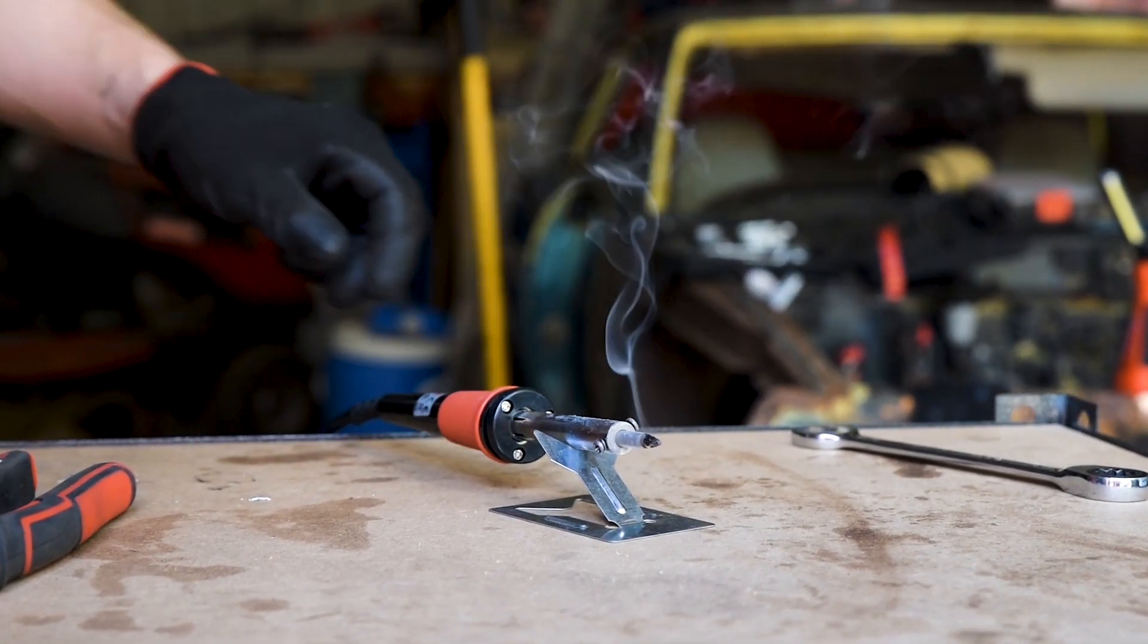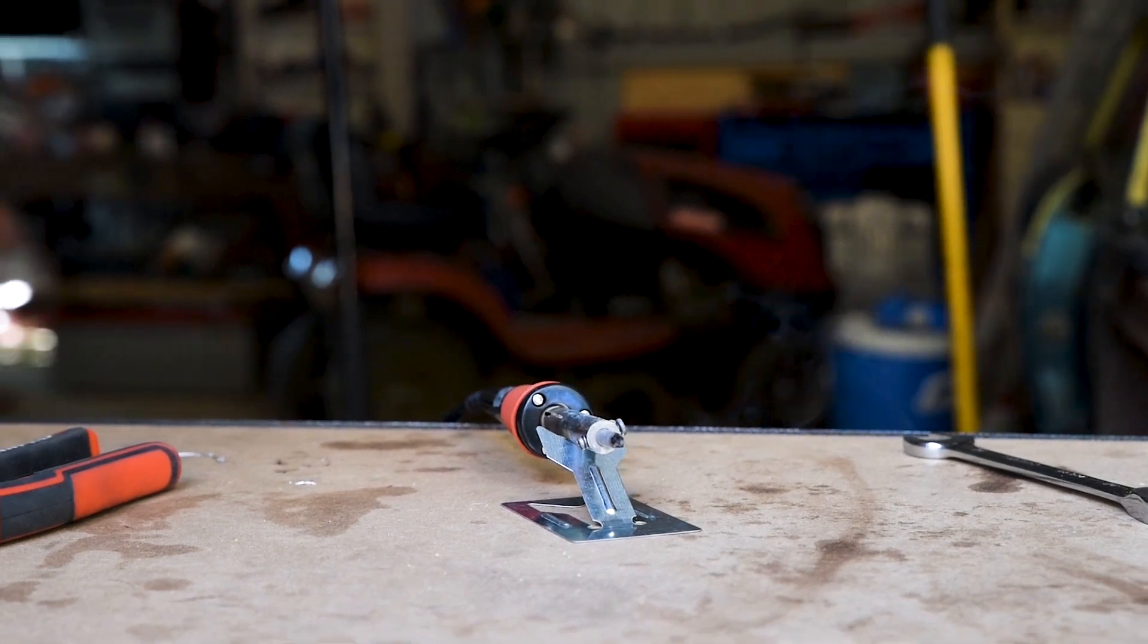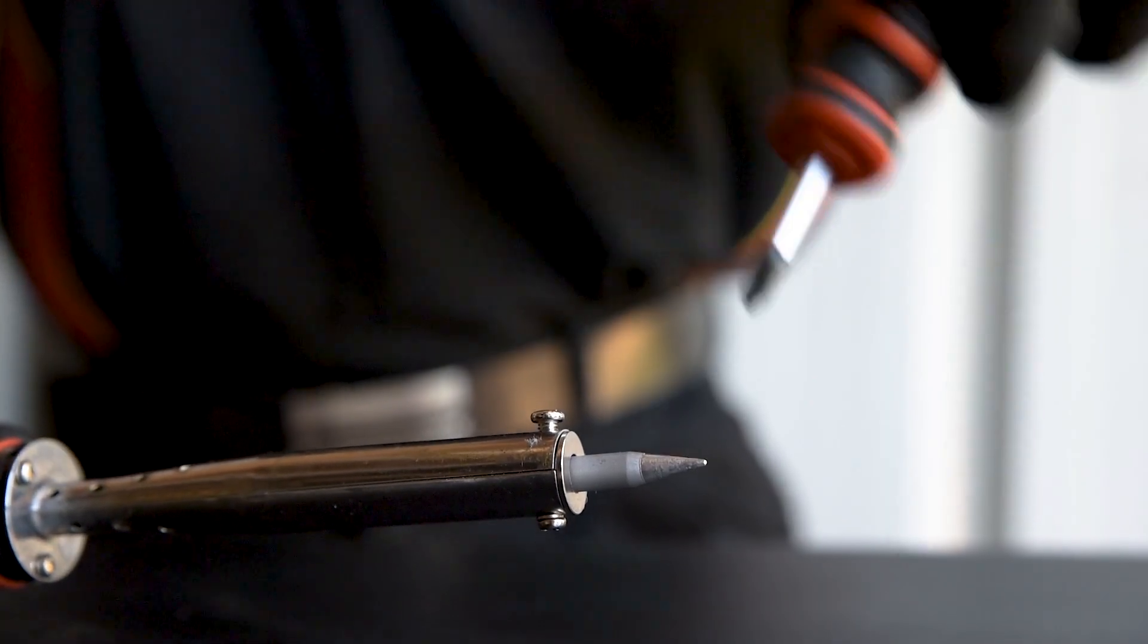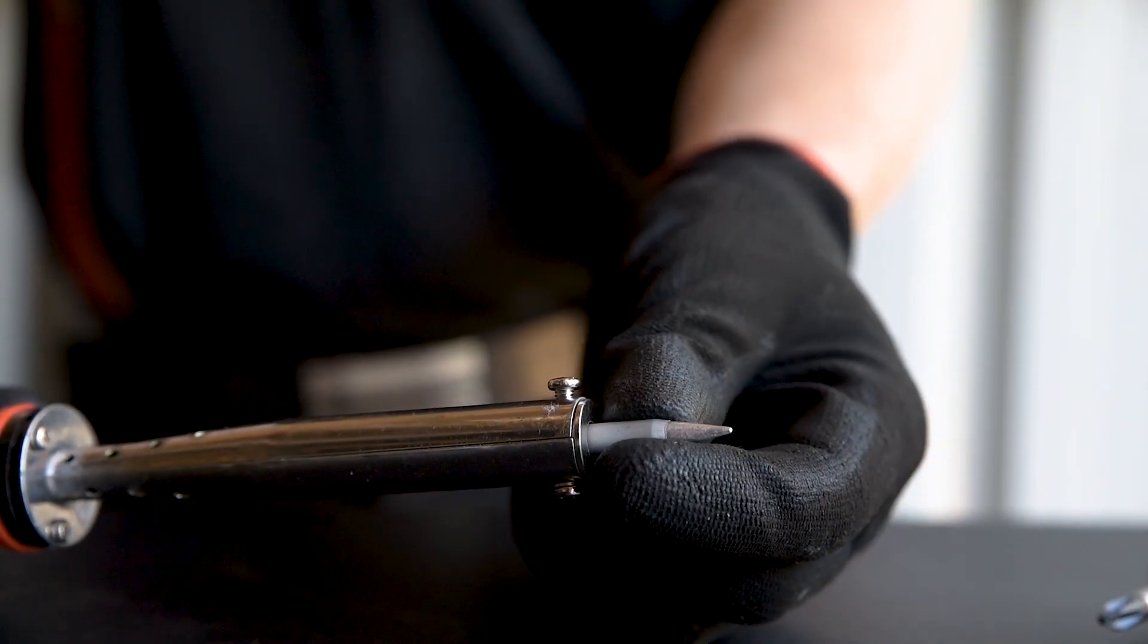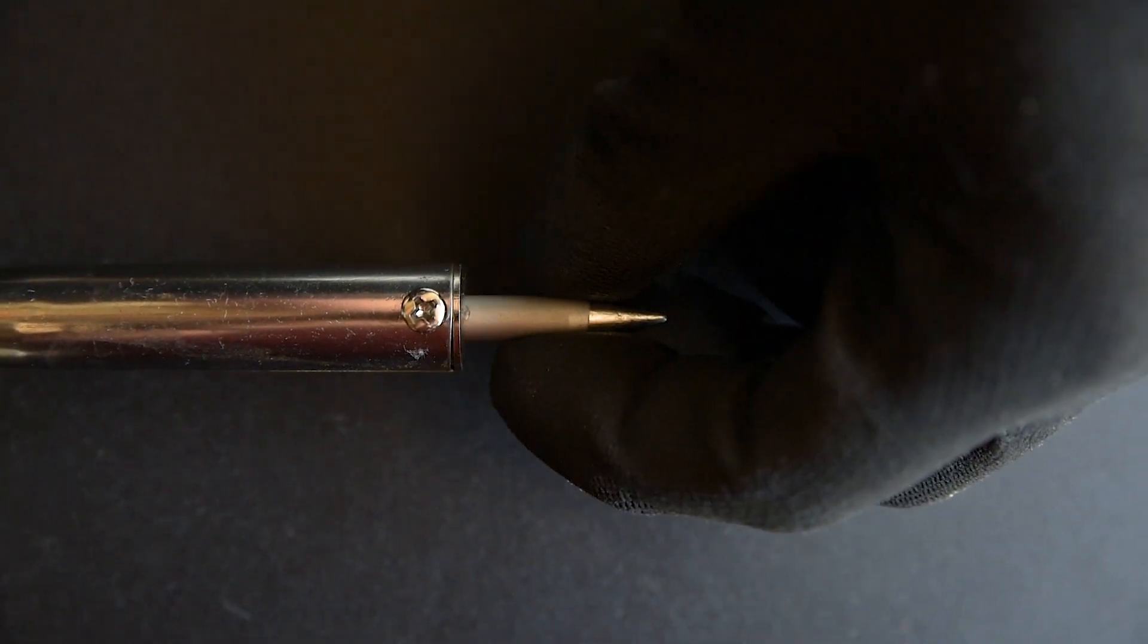Rather than resting it on a surface that might be damaged, each unit is supplied with a handy stand. As all soldering iron tips eventually wear out, Toledo have engineered their irons for easy tip replacement rather than throwing out the whole unit.